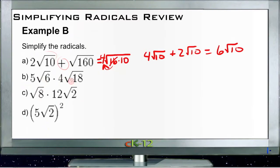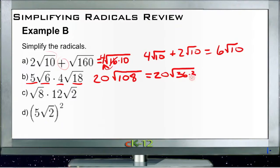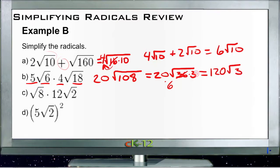Now if we're multiplying the radicals, we don't need to worry about having the same radical. We don't have to have the same number underneath — we can just multiply the whole numbers and then multiply the radicals themselves. So we have 5 times 4, that gives us 20. And then 6 times 18 is 108. 108 reduces to 36 times 3, so we have 20 times the root of 36 times 3. The root of 36 is 6, so we pull a 6 outside. That gives us 20 times 6, or 120, square roots of 3.